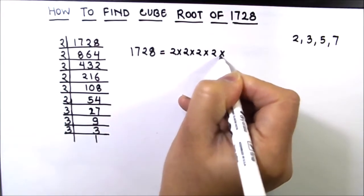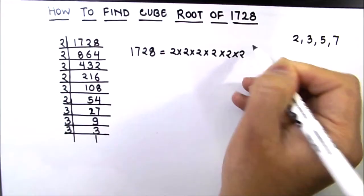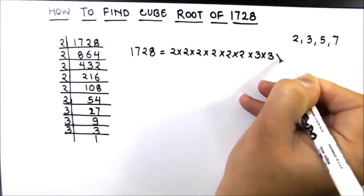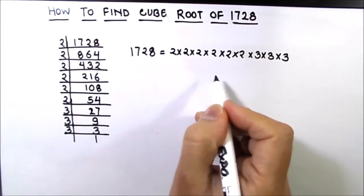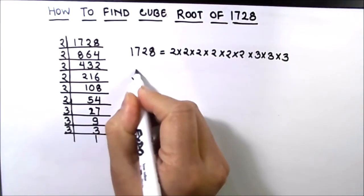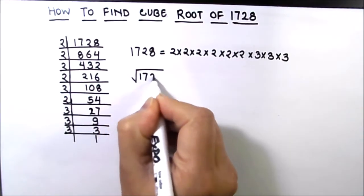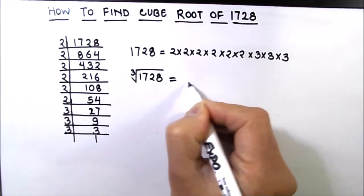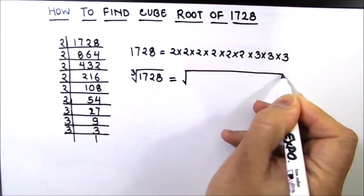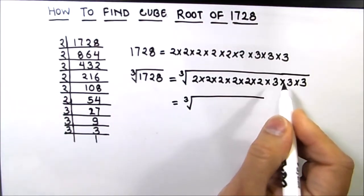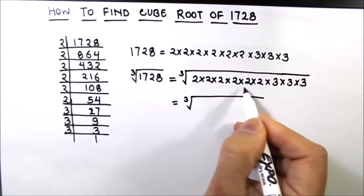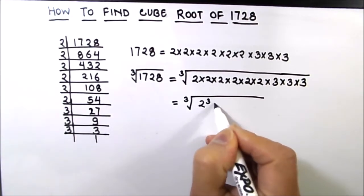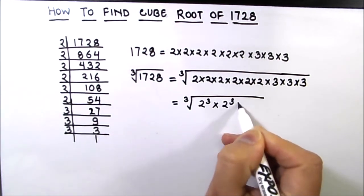Taking the cube root on both sides, this is the cube root of 1728. We can write these numbers in the form of cubes: this is 2 cubed times 2 cubed times 3 cubed.